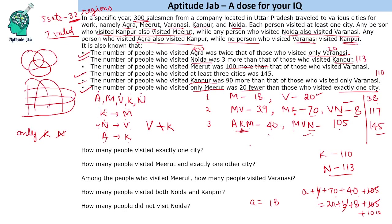Now we can answer the questions. The first question: how many people visited exactly one city? Only Meerut is 38 and only Varanasi is 20, so exactly one city is 58. How many people visited Meerut and exactly one other city? That is Meerut-Varanasi (39? — checking: A=18 for Meerut-Varanasi) plus Meerut-Kanpur (70), totalling 109 people.